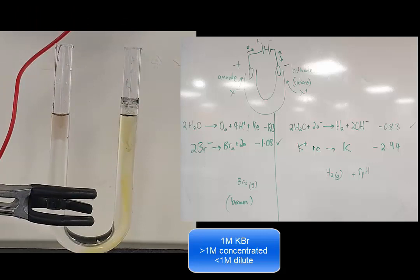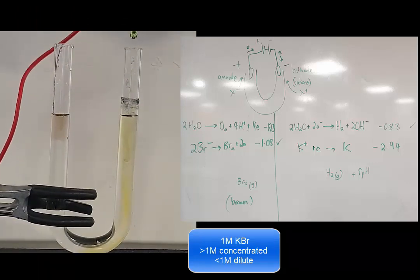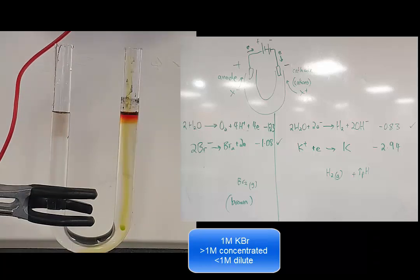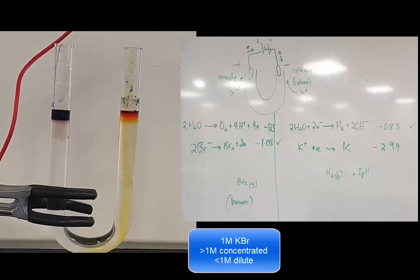As you'd expect, the left-hand side is basic. You might not have expected the right-hand side to be acidic because you could see bromine come off, but you couldn't see the oxygen coming off.